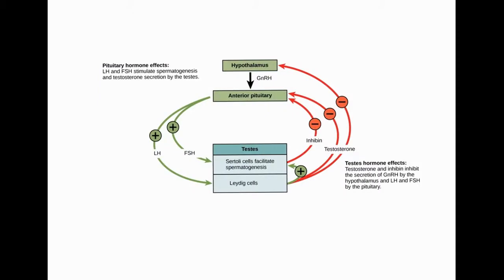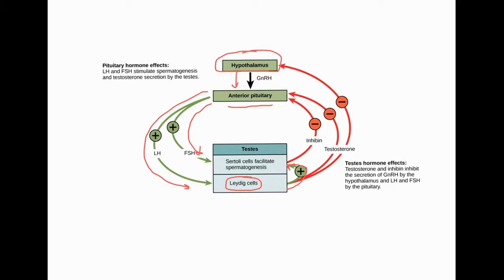A diagram shows the full pathway: the hypothalamus releases GnRH, which stimulates the anterior pituitary to release both LH and FSH. LH stimulates the Leydig cells to produce testosterone, which facilitates spermatogenesis. Testosterone feeds back negatively on both the hypothalamus and anterior pituitary. Inhibin also negatively feeds back to stop GnRH release and inhibit LH and FSH secretion.